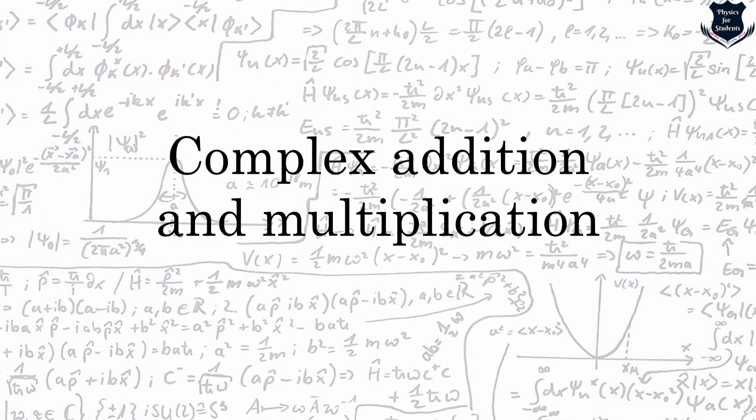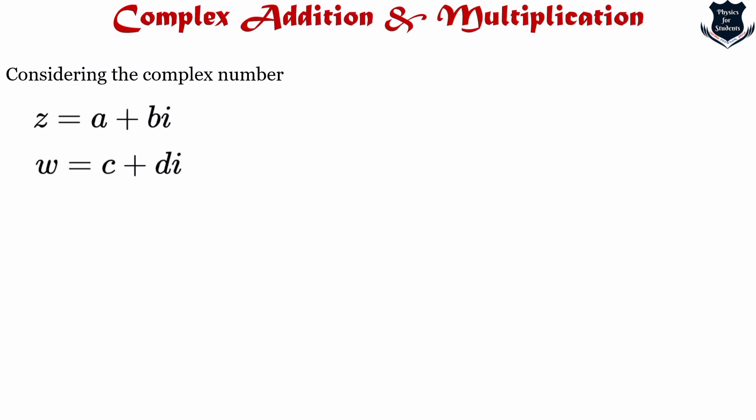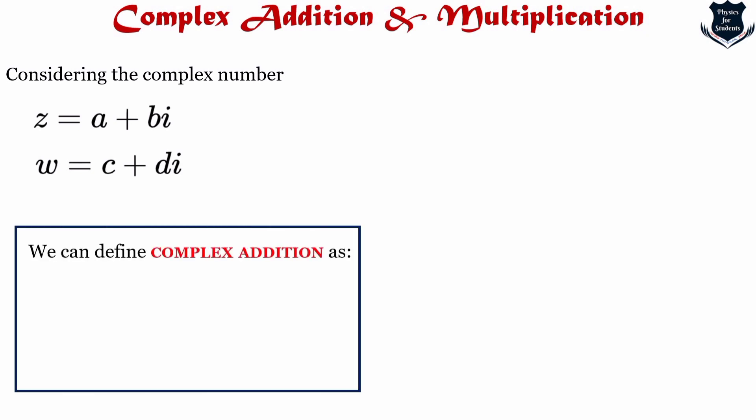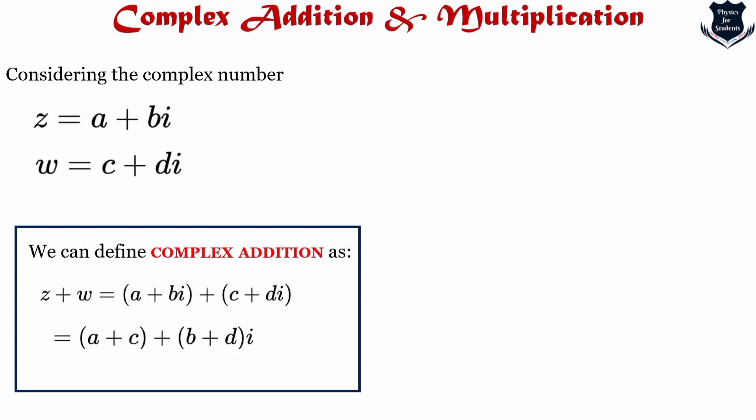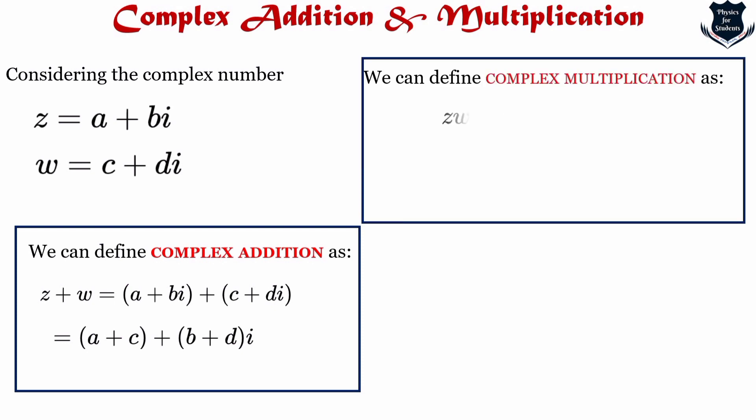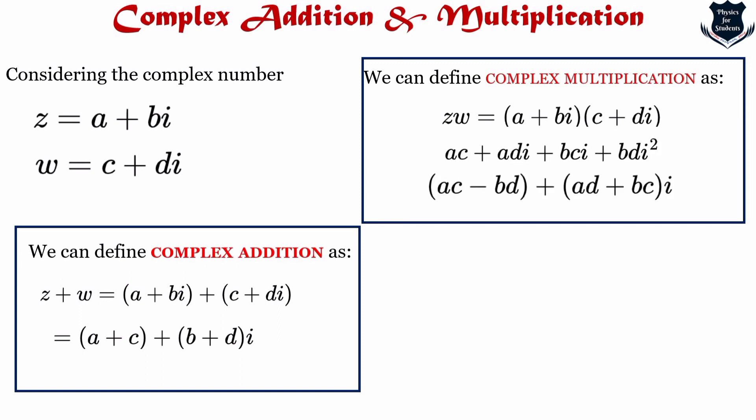First we will look into complex addition and multiplication. Consider two numbers z = a + bi and w = c + di. We can define complex addition as follows — it follows the commutative and other rules. Complex multiplication can be defined step by step, finally leading to ac − bd + (ad + bc)i, recalling that i² = −1.